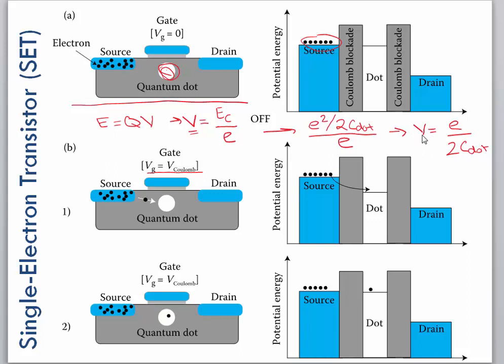So this is the gate, the V_Coulomb or V_G, if you will, the gate voltage. The voltage needed to overcome that Coulomb blockade.